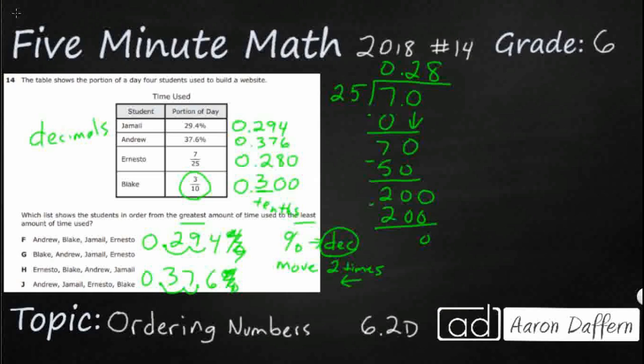So now we have all of our numbers in decimals. We can easily order them. Let me show you a way that might be a little bit easier. You can always change your fractions to find an equivalent fraction. Remember when I said that if you can get your denominator into 10, 100, or 1,000, you're golden.